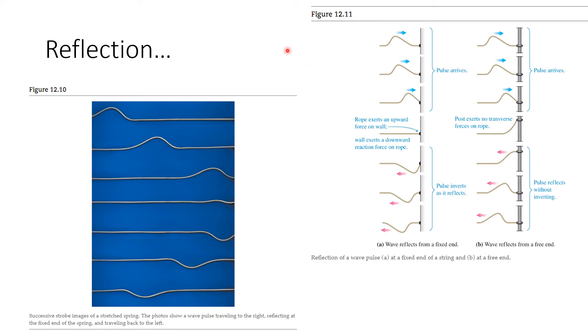If a wave comes in like this, these are pictures getting closer and closer to the boundary. When it hits the fixed boundary, it is reflected but inverted, and so it's going back, the inversion of what we had.